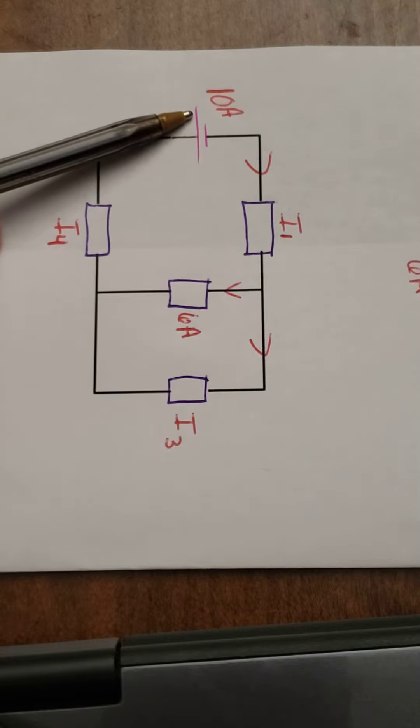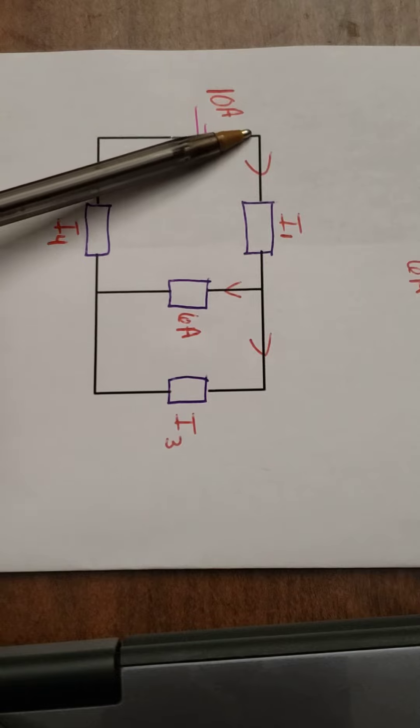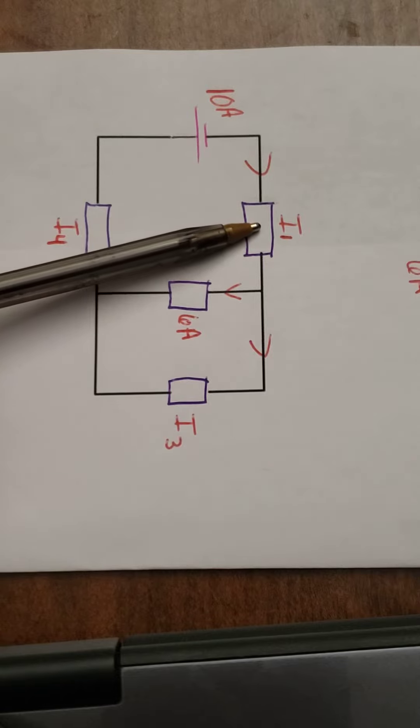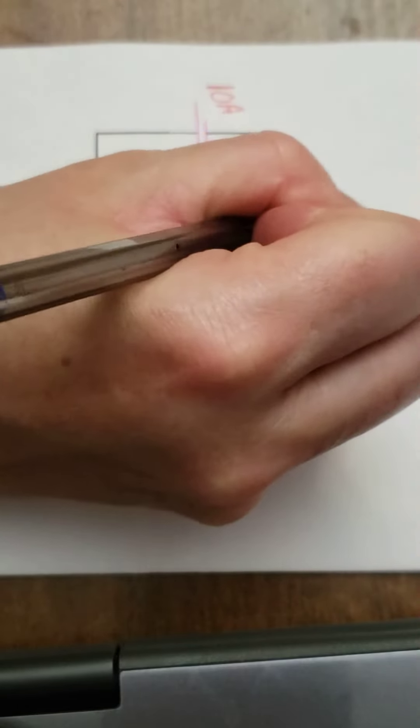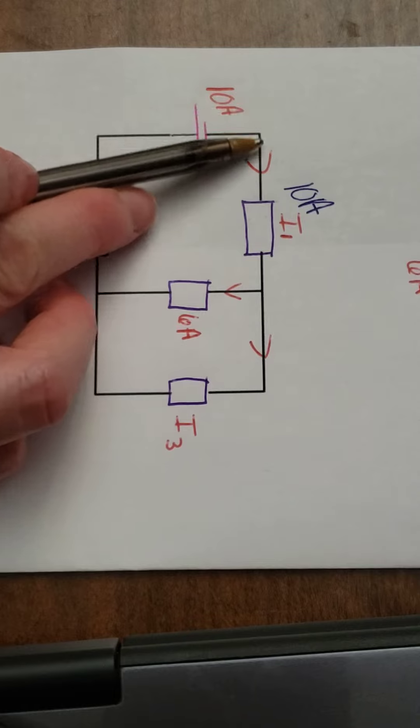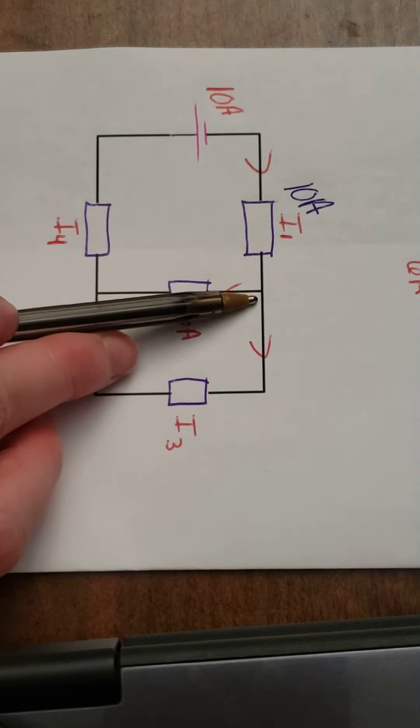I know what the total is, or the battery this time is 10 amps. So if 10 amps of electrons come out of the battery, going through the very first resistor has to be 10. There's no other possibilities. If 10 comes out of here, all 10 have to go this way.